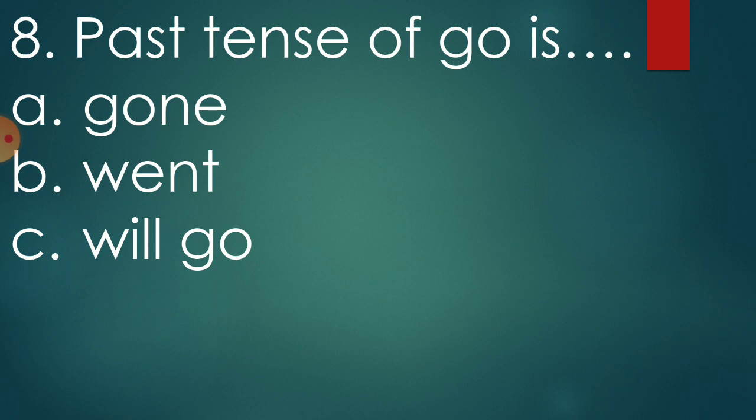Question 8. Past tense of go is. Past tense of go is. Gone, went or will go. Option B is the correct answer. Went. Past tense of go is went. Gone is the past participle of go. Go, went, gone. And will go of course it is in future tense. And we are asked here the past tense of go. That is, went.